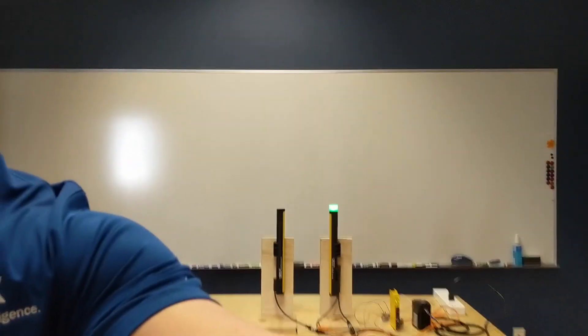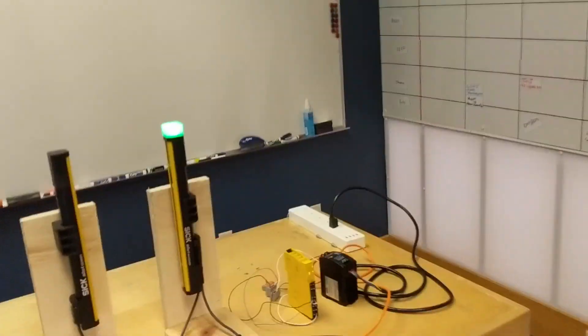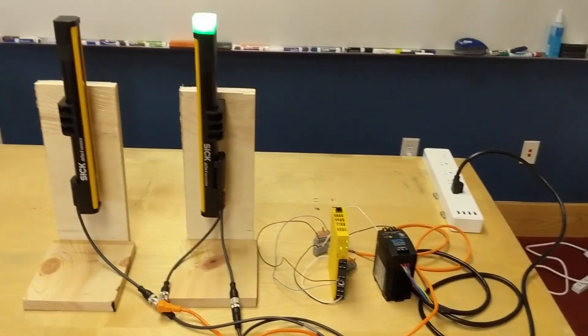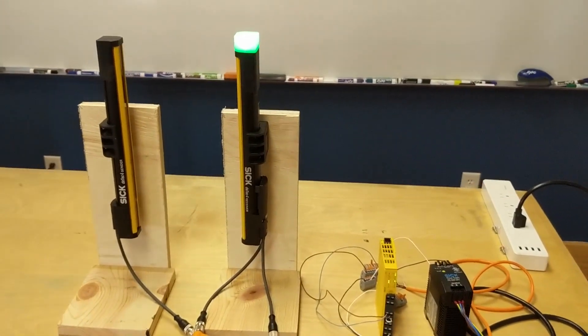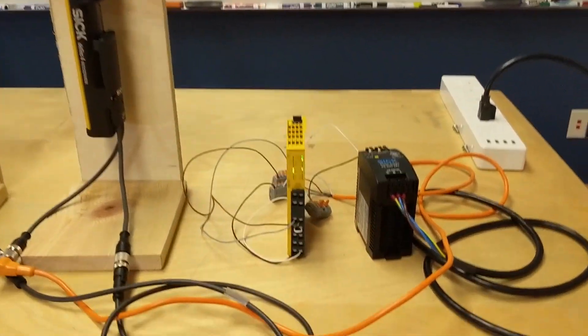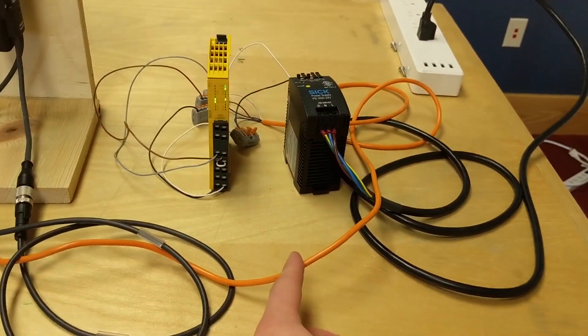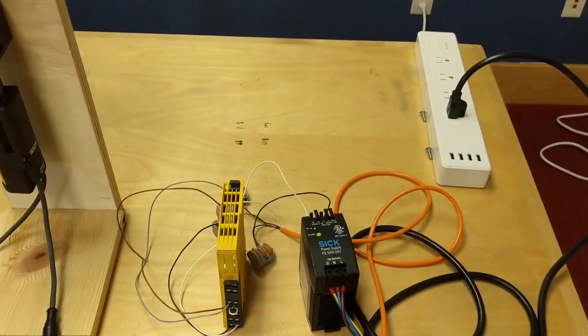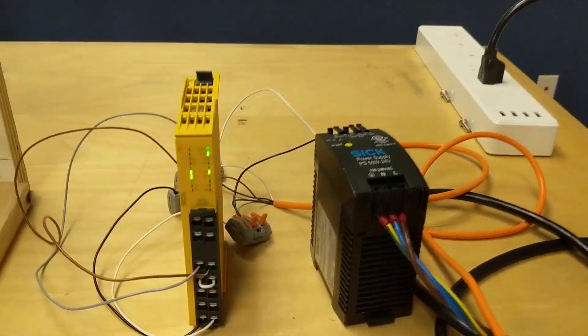So now I'm going to take you over to the setup I have. Right here as you can see I have two light curtains to the left and then I have it hooked up with a four pin cable and that is going with flying leads to the back of this OSS-D2.